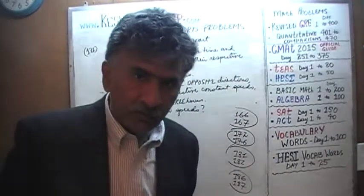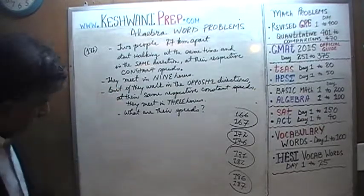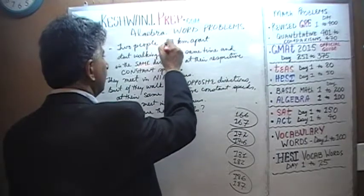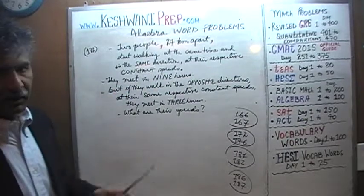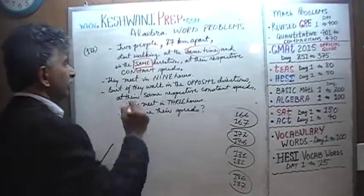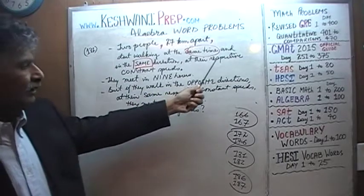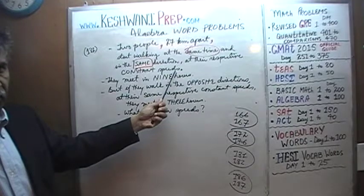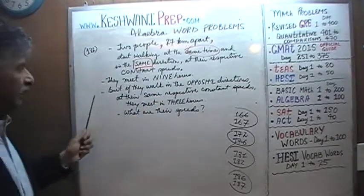As you can see, the problem is already on the blackboard. It says two people, 27 kilometers apart, start walking at the same time and in the same direction at their respective constant speeds. They meet in nine hours.